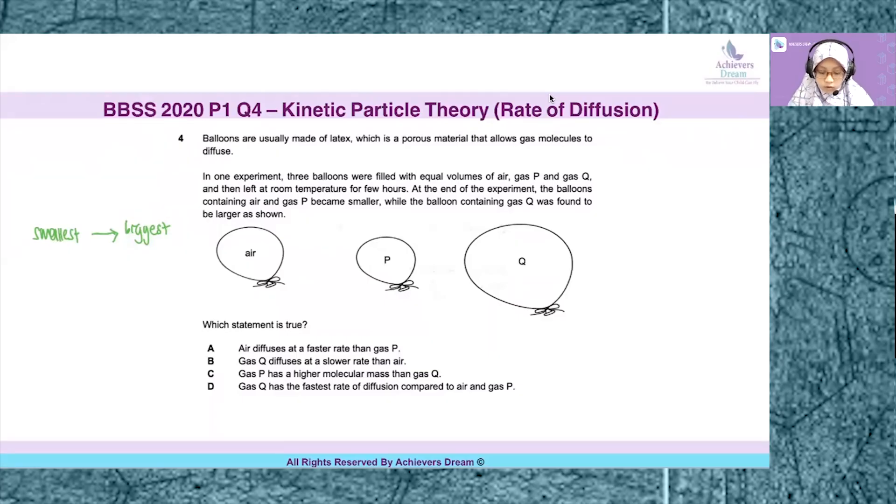Question 4 is actually testing you on the topic of kinetic particles theory and the concept that is being tested is rate of diffusion. There are two factors that affect the rate of diffusion. One is the molecular mass of the gas and the second one is the temperature in which the system is placed in.